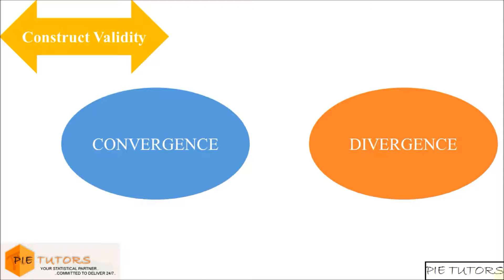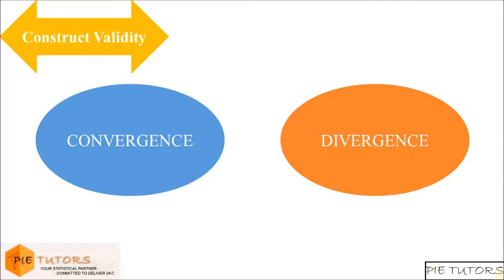The first process is referred to as convergent validity, and the second process is referred to as divergent validity. Before we look at how to establish convergent and divergent validity, it is important to learn that they work together. Neither one alone is sufficient for establishing construct validity.